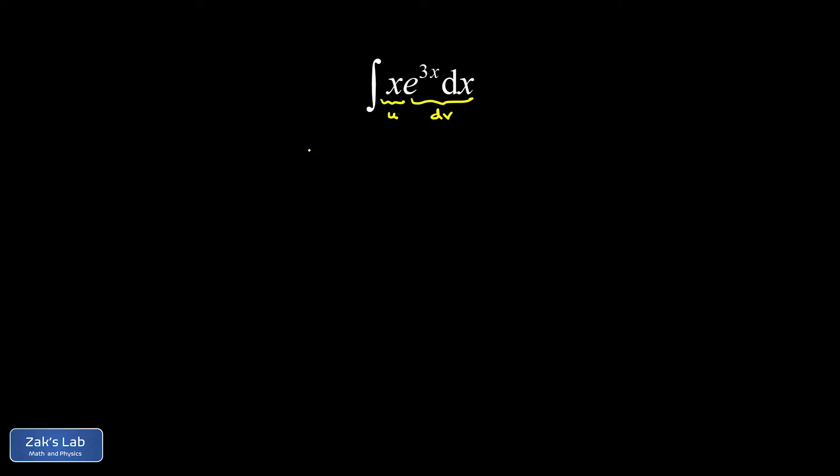And generally speaking, as long as your u is going to get simpler when you take the derivative, you've made good substitution choices in your integration by parts. And that's the case here because the derivative of x is 1. It got simpler.